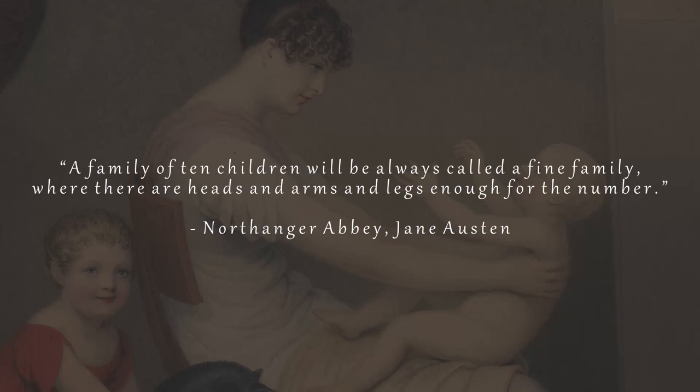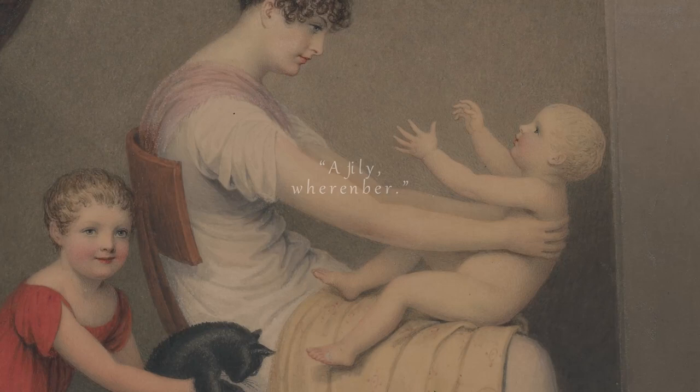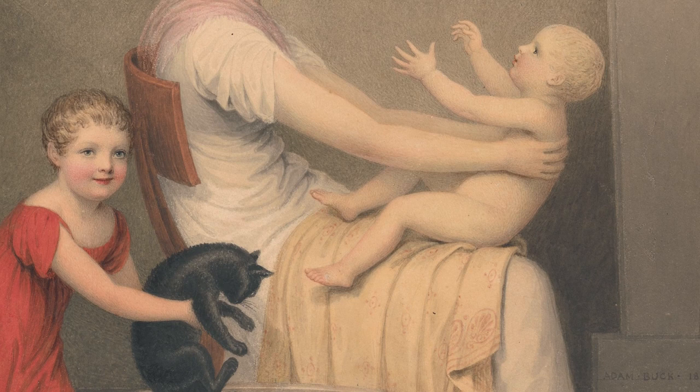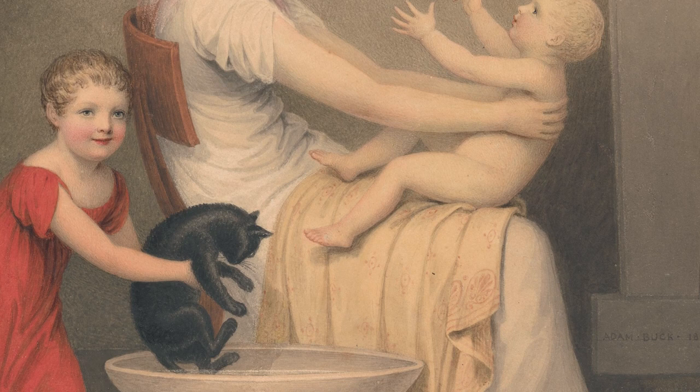But what church-ordained family planning methods were around back then? Jane Austen advocated abstinence, and of the options available at the time — which included magic and sneezing after sex — abstinence probably was the most effective one. When she heard of Mrs. Deeds having her 18th child, she wrote: "I would recommend to her and Mr. D the simple regimen of separate bedrooms."